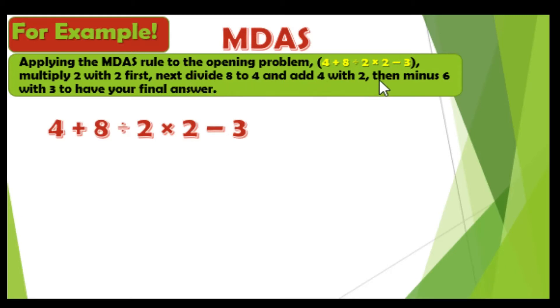Now we have here our sample equation. How to answer this one following the MDAS rule? Of course, multiplication comes first. We have to multiply 2 times 2.